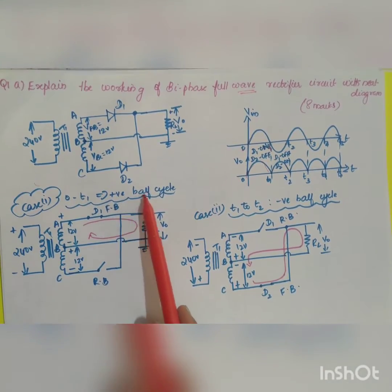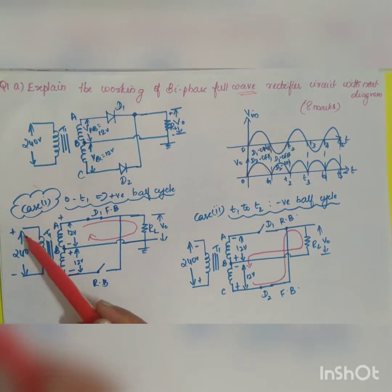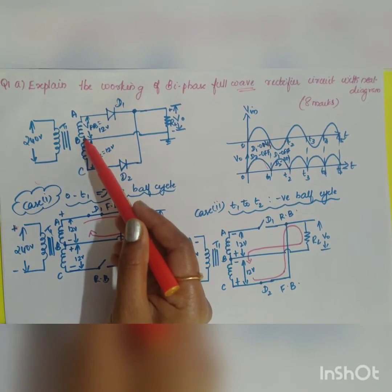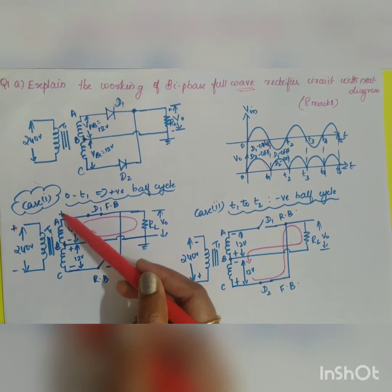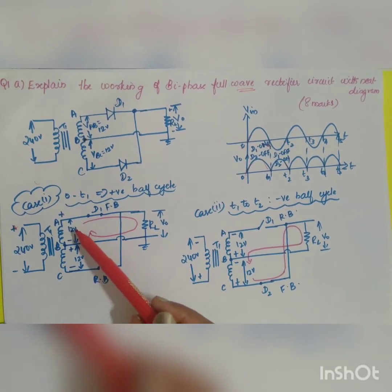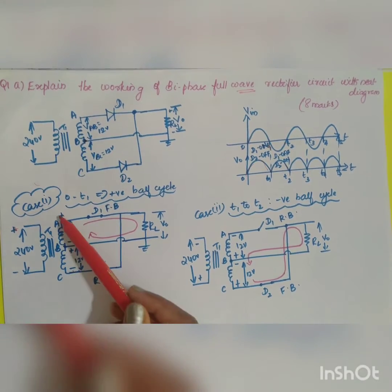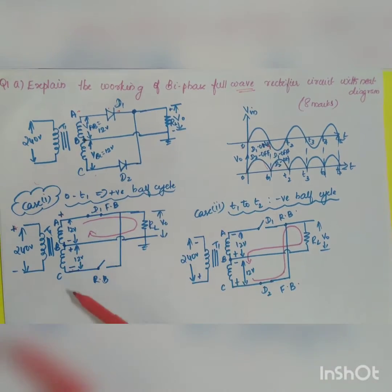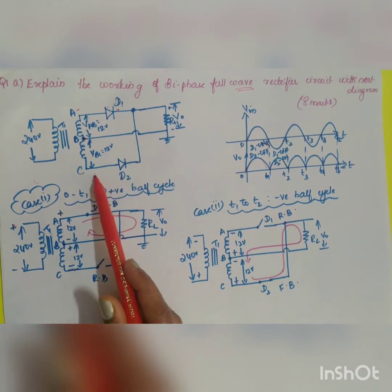During the positive half cycle, the input becomes positive-negative-positive because it is center tapped. Which diode will conduct? Diode D1 will be forward biased (positive to negative), while diode D2 is reverse biased (negative to positive). Diode D1 acts as a closed switch and conduction occurs.